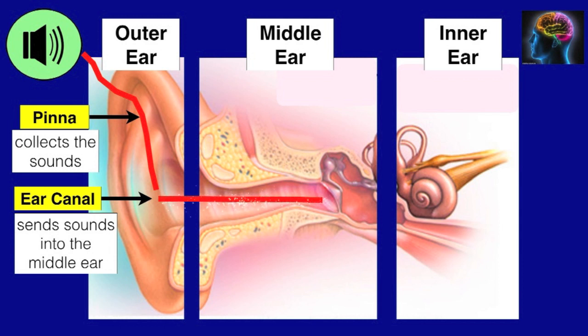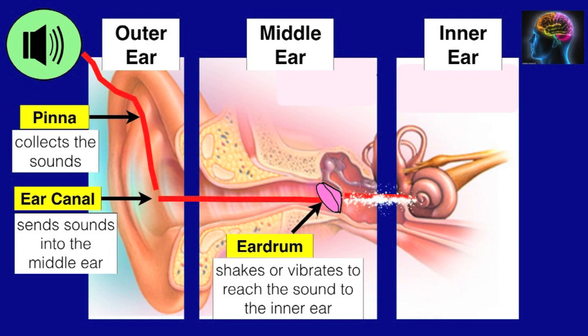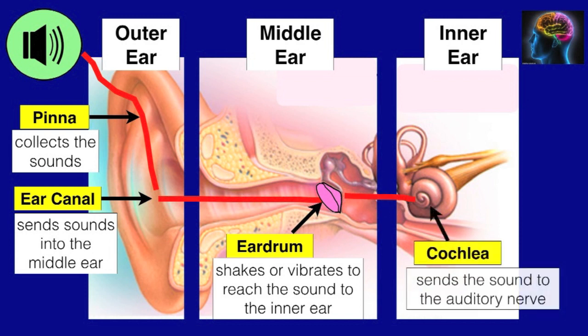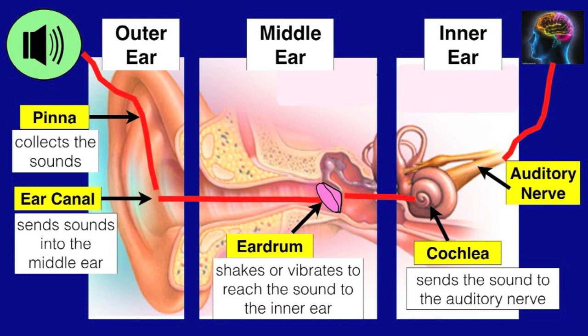The eardrum will shake or vibrate so that the sound will reach the inner part of the ear, which is the cochlea. The cochlea sends the sound to the auditory nerve, and the auditory nerve sends the information to the brain. It is the brain that identifies the sound detected by our ears.